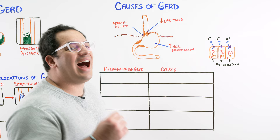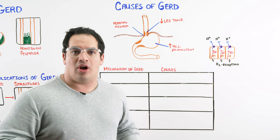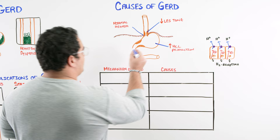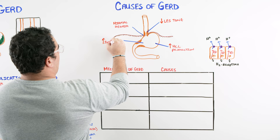The last mechanism is high intragastric pressure. If the pressure in your stomach is higher than the pressure in the esophagus, contents will move from high pressure to low pressure, decompressing into the esophagus. This last mechanism is very high intragastric pressure.